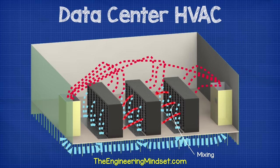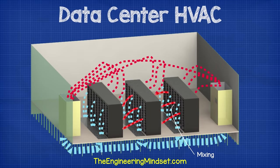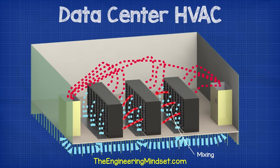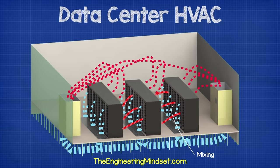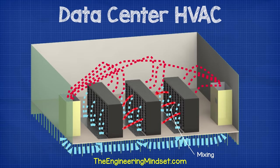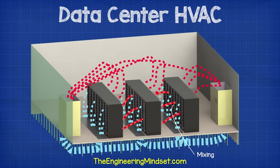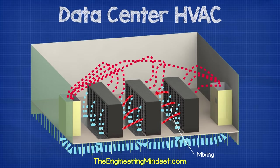To combat this, the servers were positioned so that all the server racks were facing the same way. This was a slight improved strategy but quite often some of the discharged air was being pulled into the intake of the server racks sitting behind it, which led to mixing and an increased air temperature.